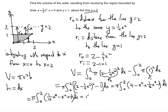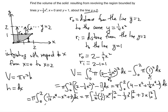Taking the antiderivative, keeping π out front, we get: (1/16)·(1/5)·x⁵ from 0 to 2, minus (1/3)x³ from 0 to 2, plus 3x from 0 to 2. Evaluating gives π times [(1/80)·32 minus 8/3 plus 6].